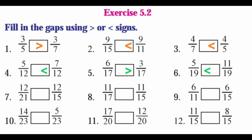Next: 7 by 12 is greater than 5 by 12. 6 by 17 is greater than 3 by 17. 11 by 19 is greater than 5 by 19. Then: 12 by 15 is greater than 11 by 15. 6 by 11 is greater than 6 by 15. 14 by 23 is greater than 5 by 23. 17 by 20 is greater than 12 by 20. 11 by 15 is greater than 8 by 15. See you in the next exercise — thank you.